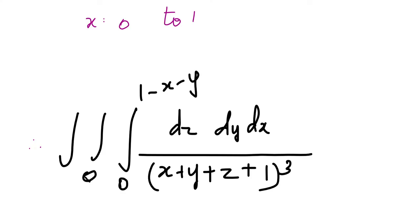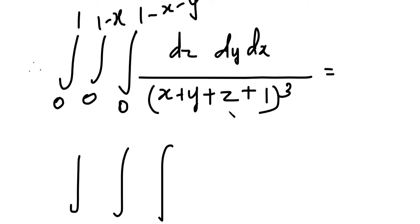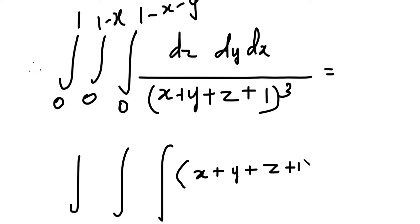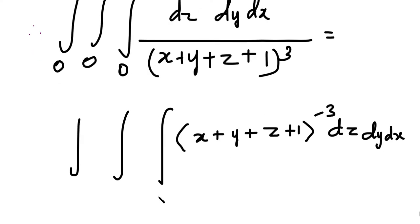The inner integration has limit of z from 0 to 1 − x − y. The y limit has lower limit 0 and upper limit 1 − x. The outer integration is with respect to x, with lower limit 0 and upper limit 1. We rewrite the function as (x + y + z + 1)^(−3) · dz dy dx. So the triple integral becomes ∫₀¹ ∫₀^(1−x) ∫₀^(1−x−y) (x + y + z + 1)^(−3) dz dy dx.